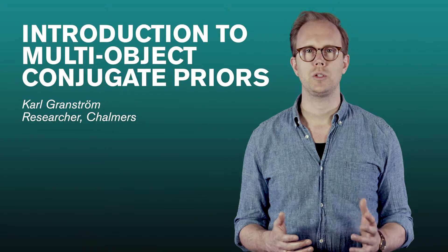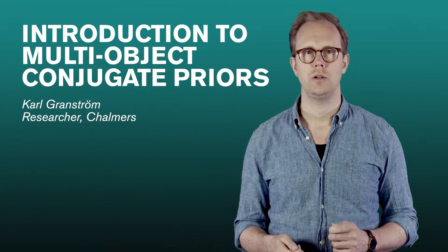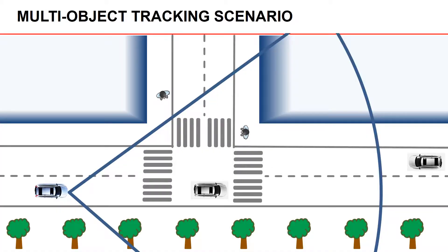In this video we're going to start with some examples and try to give some intuition about what we will learn. Shown here is a typical scenario that an autonomous vehicle might encounter in a city. We have a T-crossing with two roads, and there are some vehicles and pedestrians both in the field of view and outside the field of view. What we want to do here is to track the objects while they are in the field of view.